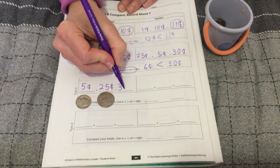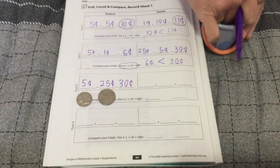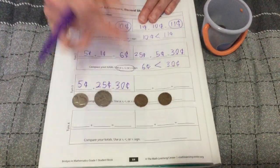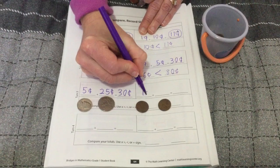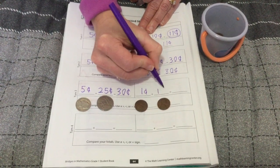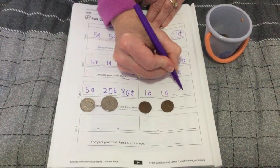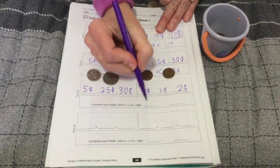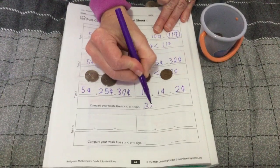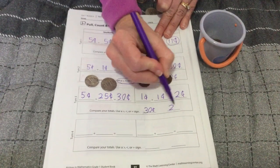Compared to... two pennies? Oh boy. I think we know which one is greater and which one is less. Two pennies, two cents. Thirty cents compared to two cents.